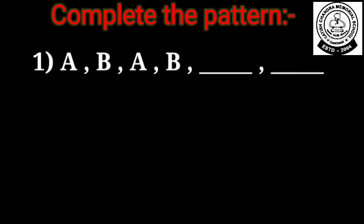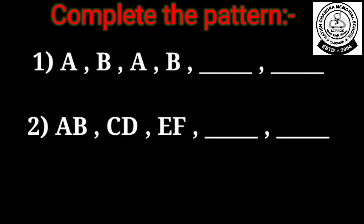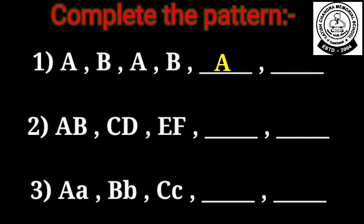There is number 1. Complete the patterns. And the number 1 question is A, B, A, and B. And children you can see it is written in a capital letter. So what will be the next 2 patterns? Yes, again A and then after that we will write B.